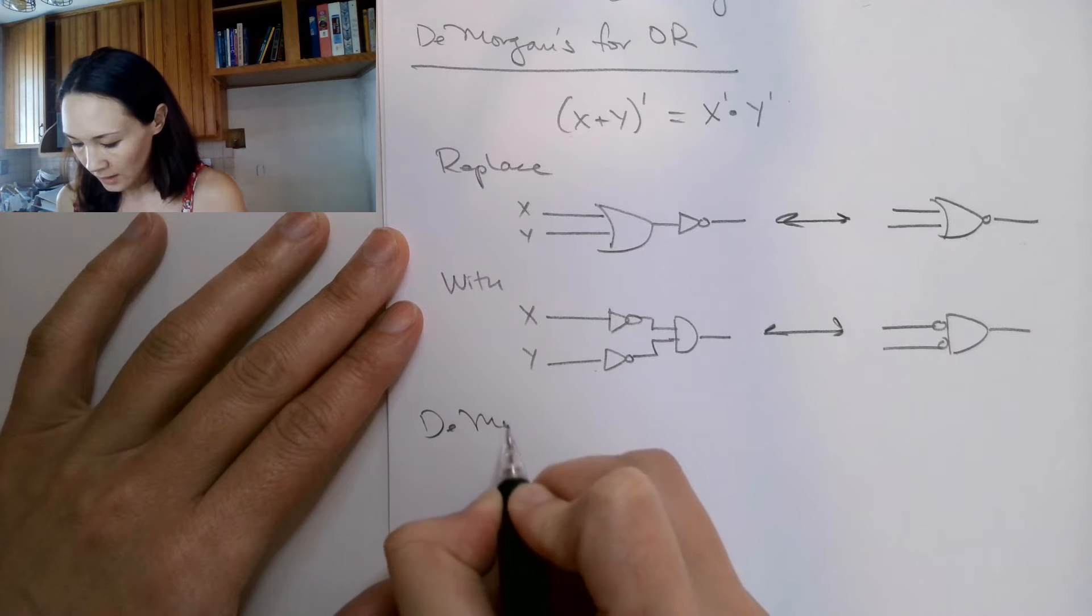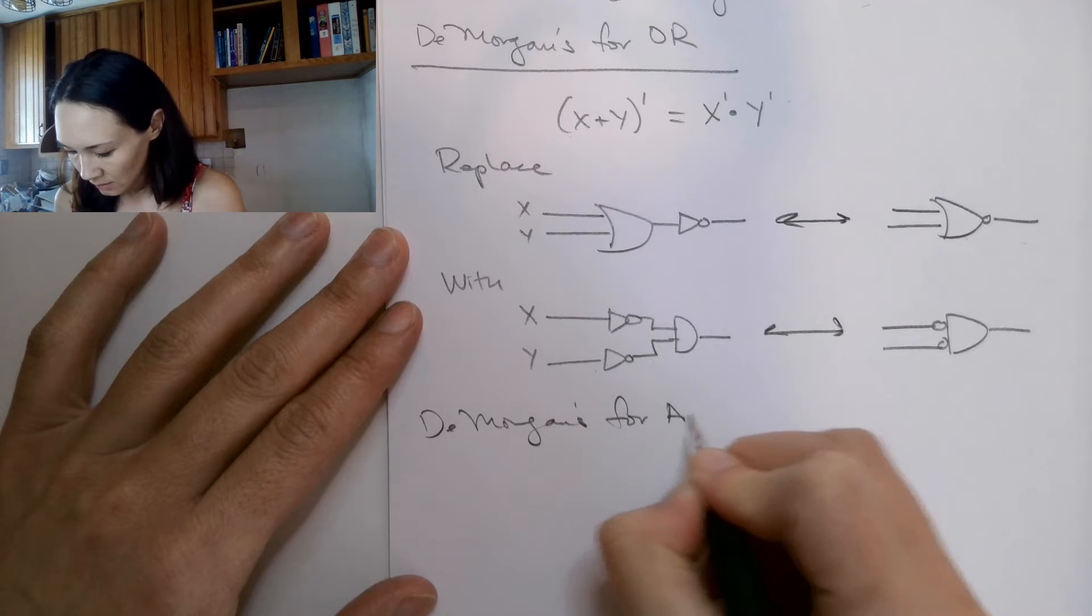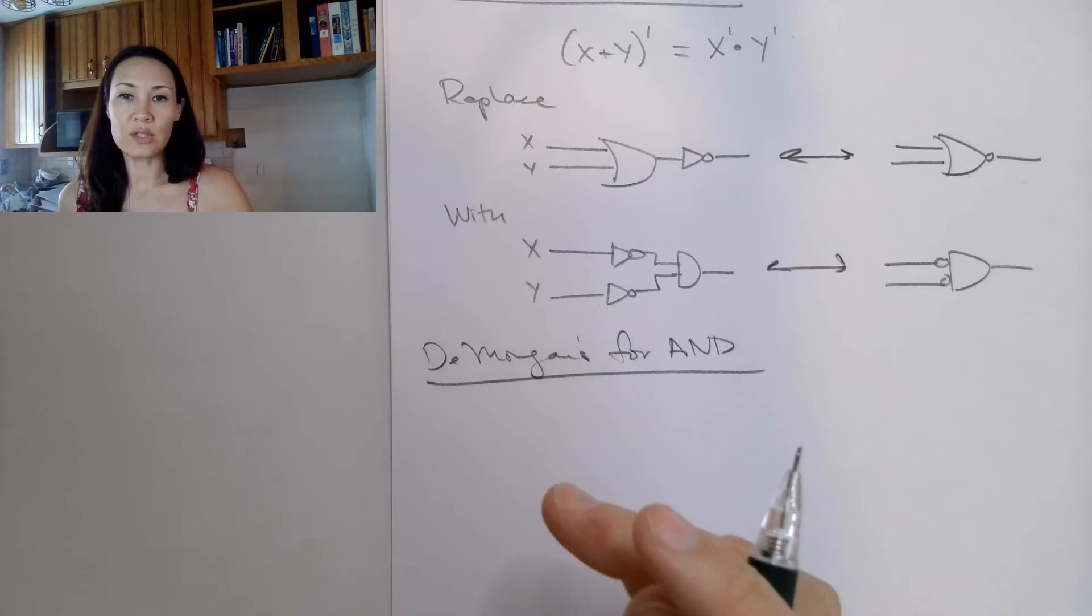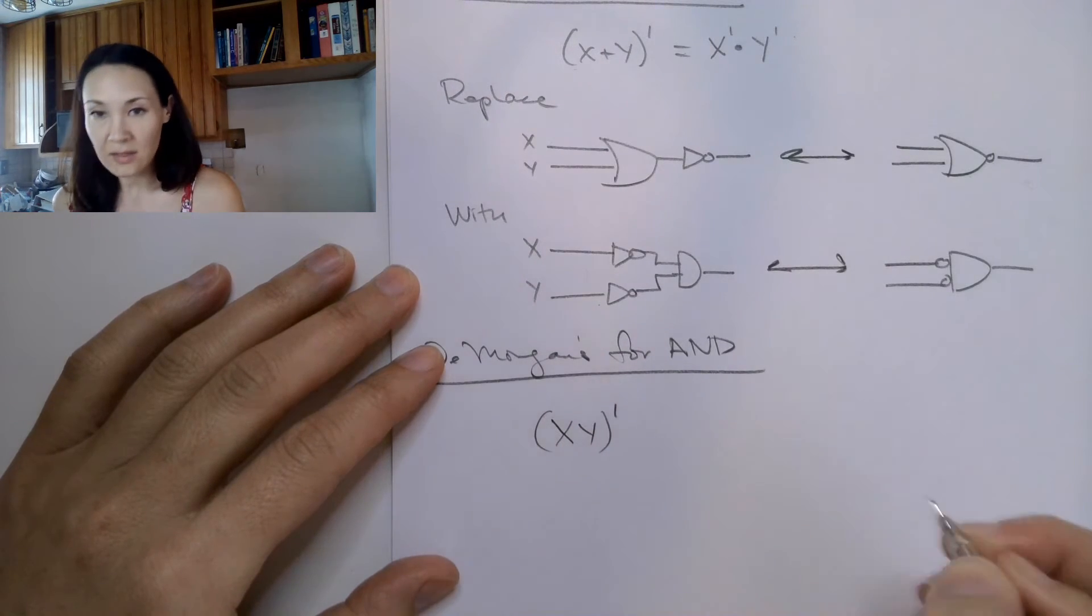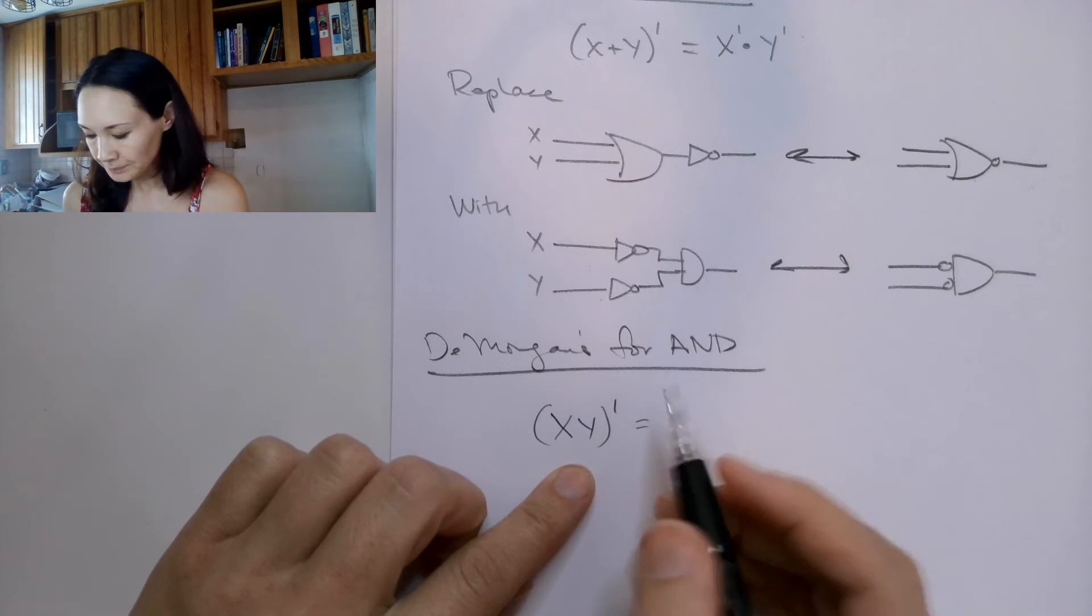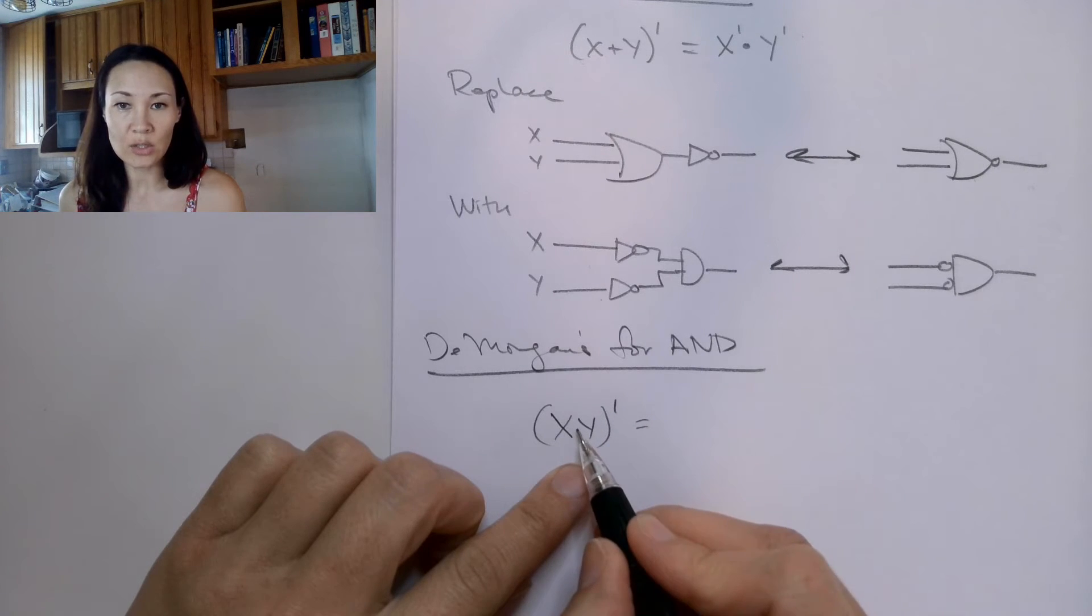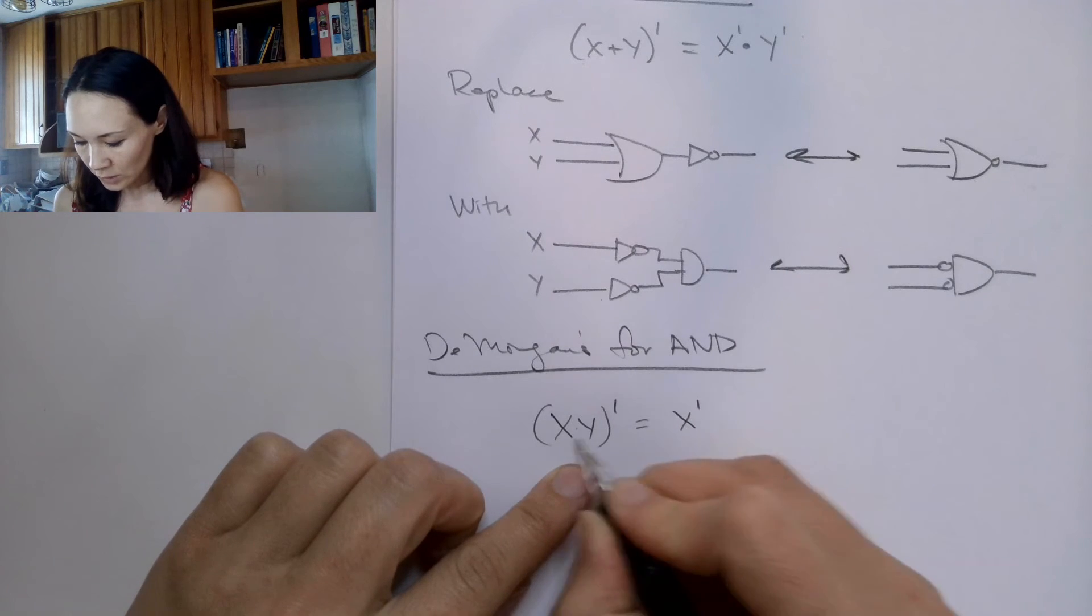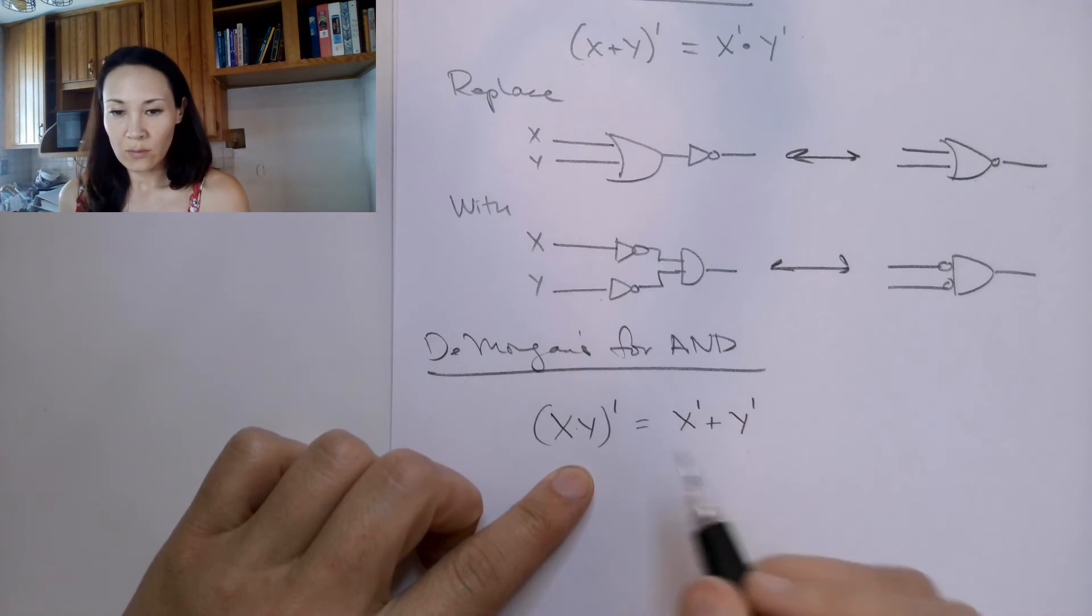So then for De Morgan's for an AND gate, it looks like this. If we have two inputs that are getting ANDed, X ANDed with Y, and then we invert that, that can be replaced with distributing the NOT to each one of these inputs and changing this AND to an OR. So we distribute the NOT, we change the AND to an OR. So this is De Morgan's for ANDing.